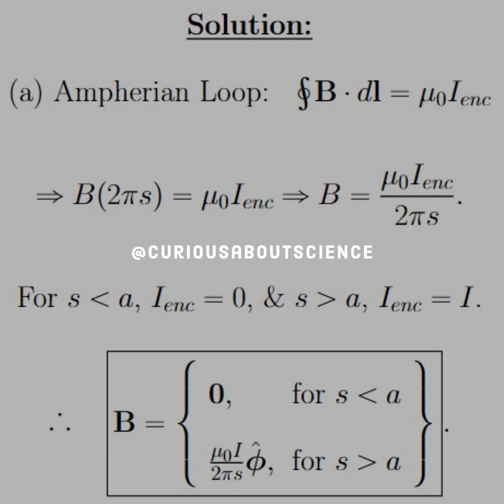Putting these together, B equal 0 for S less than A and it also equals mu naught I over 2 pi S in the phi hat direction for S greater than A. Again, we get the direction using the right hand rule.